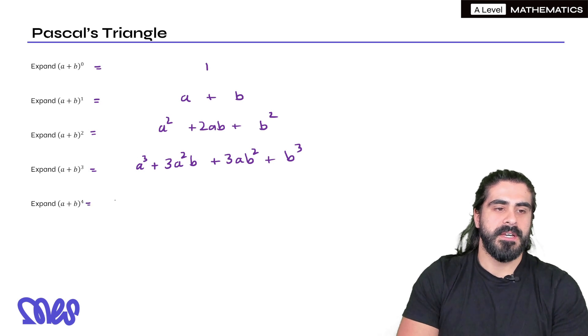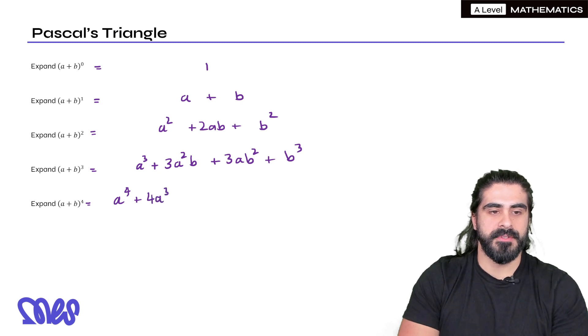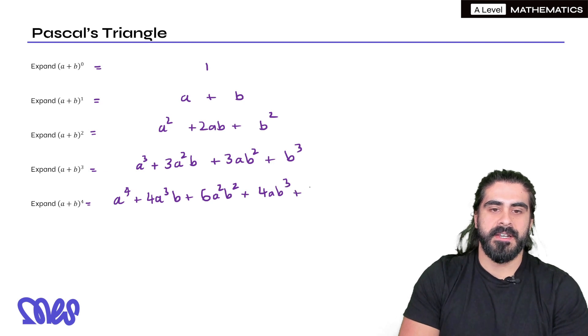And then to the power of four, it would look like a⁴ + 4a³b + 6a²b² + 4ab³ and then finally we're going to have b⁴ at the end.